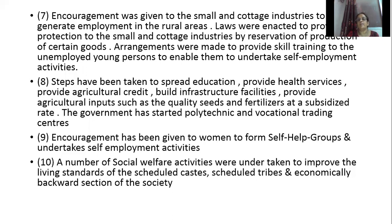The eighth strategy involved steps taken to spread education, provide health services, provide agriculture credit, build infrastructure facilities, and provide agriculture inputs such as quality seeds and fertilizers at subsidized rates. The government also started polytechnic and vocational training centers to develop skills among the rural population.